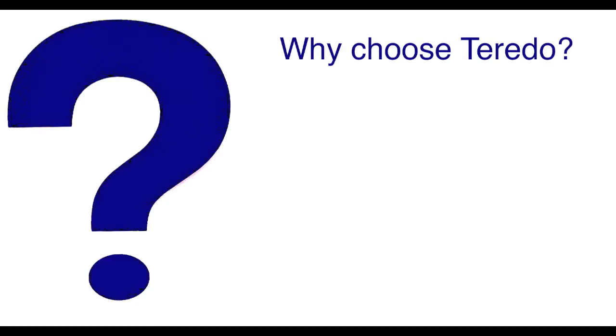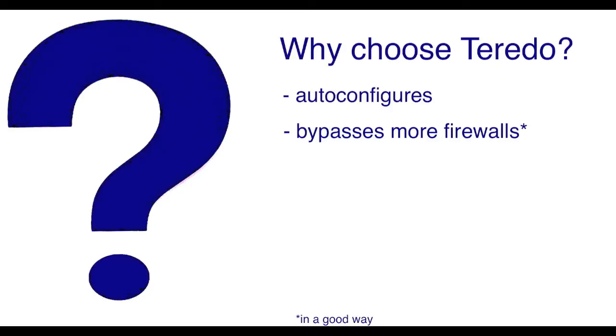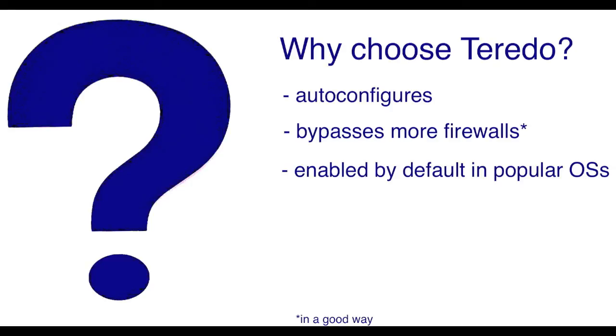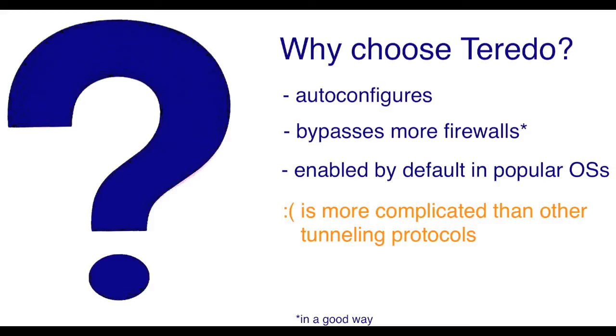And Teredo is a trendy option, and for many reasons. It auto-configures, bypasses more firewalls than 6to4, and is enabled by default in popular operating systems. However, it is a bit more complicated, so debugging might give you pause initially. If you can't get native IPv6, there are still plenty of options for you to choose from.